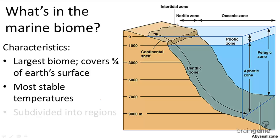The marine biome is also subdivided into different regions based on factors like the presence of sunlight, the distance from land, and water depth. Each region is inhabited by a different variety of species depending on the characteristics of that zone.